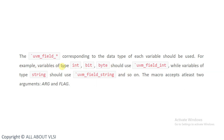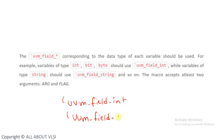UVM field macros corresponding to the data types of each variable should be used. For example, if the variable is an int data type, then we should use `uvm_field_int. If the variable is a bit data type, then we use `uvm_field_bit. According to the type of variable, we use the corresponding macro. For a string type variable, we use `uvm_field_string, and so on.